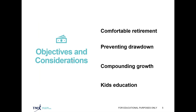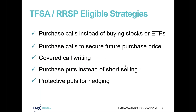When it comes to objectives and considerations, investors often focus differently depending on what they're looking to accomplish within their investment accounts. One reason you want to manage your RRSP effectively is to ensure a comfortable retirement. You're also looking to prevent drawdowns as much as possible, focus on compounding your growth, as well as saving for your kids' education. Once we have those objectives sorted out, we can look at the options market to help meet those objectives more effectively.